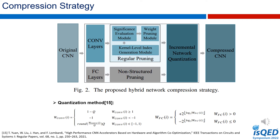All weights with small absolute values are pruned according to a precise pruning ratio, and a 5-bit index is used to record the relative position information of the non-zero weights. After pruning, the non-zero weights are quantized according to the method in reference 15. The weights of CONV layers are quantized to 8-bit and the weights of FC layers are quantized to 4-bit. The network accuracy is recovered through retraining. Using the hybrid compression strategy, the model can not only be calculated efficiently but also achieve a high compression ratio.